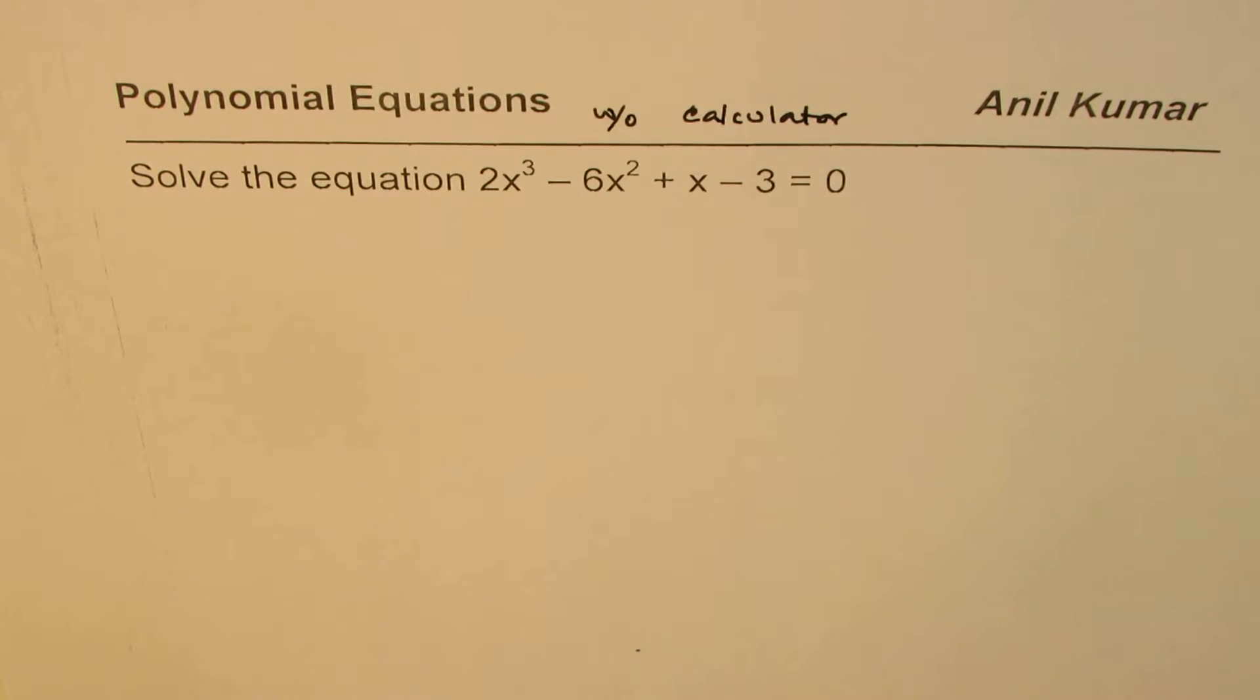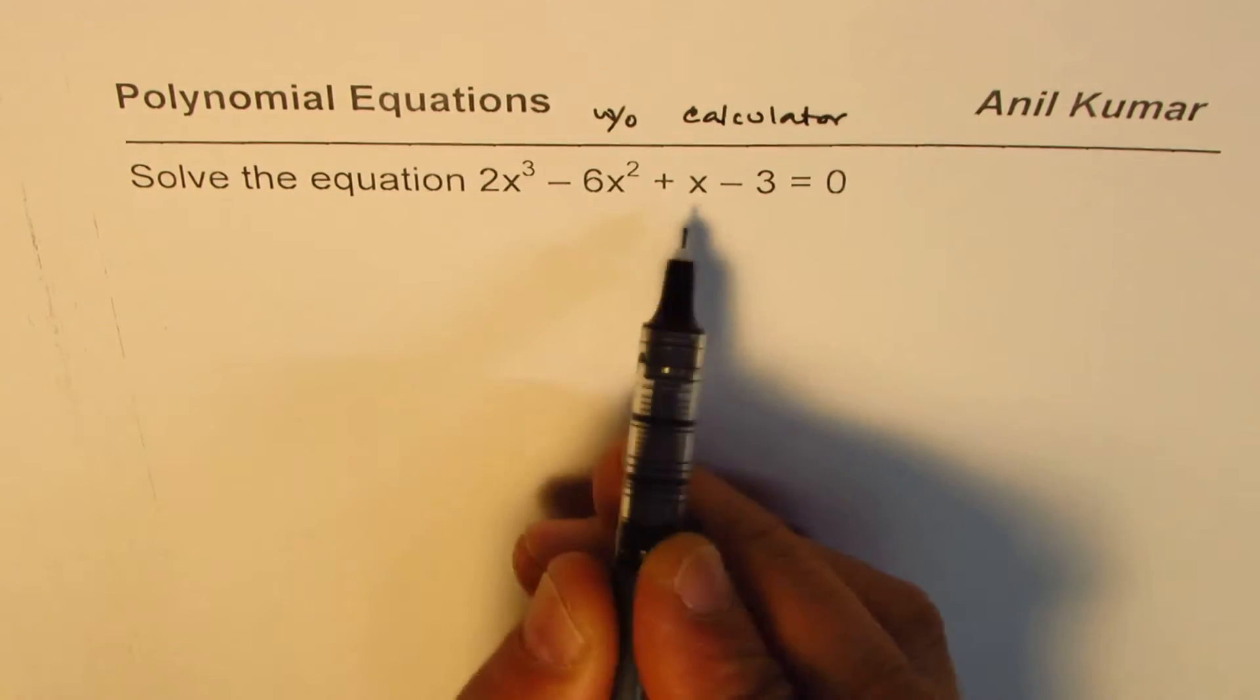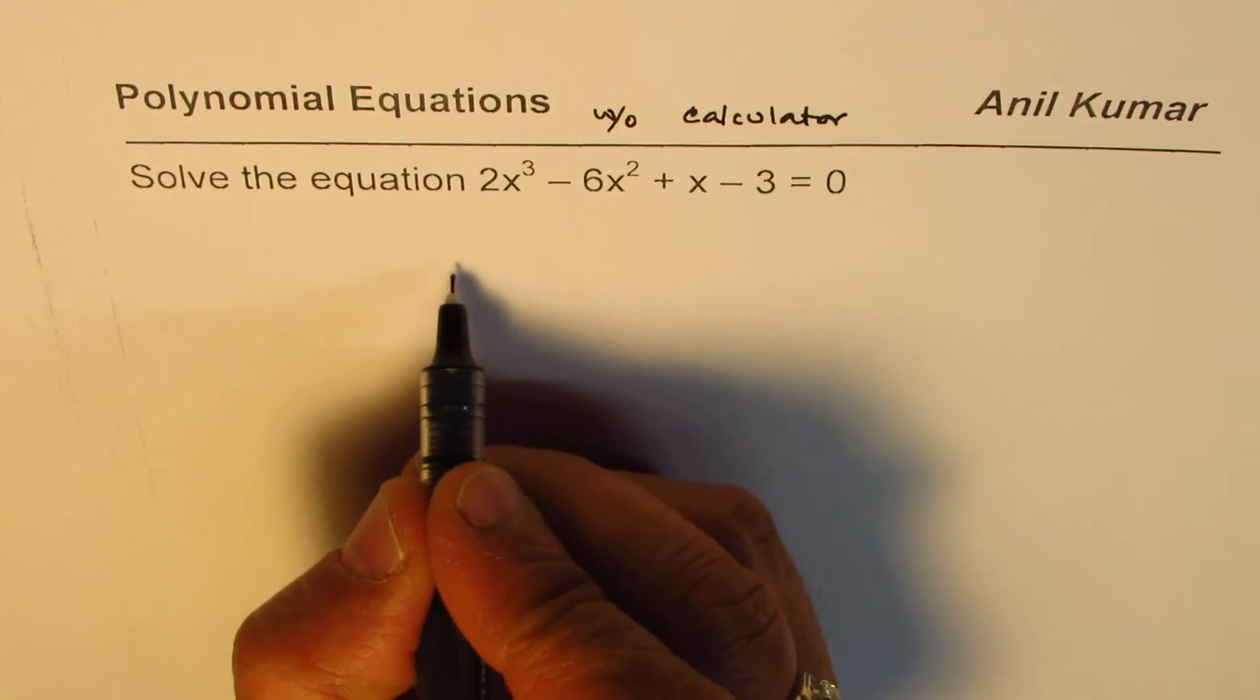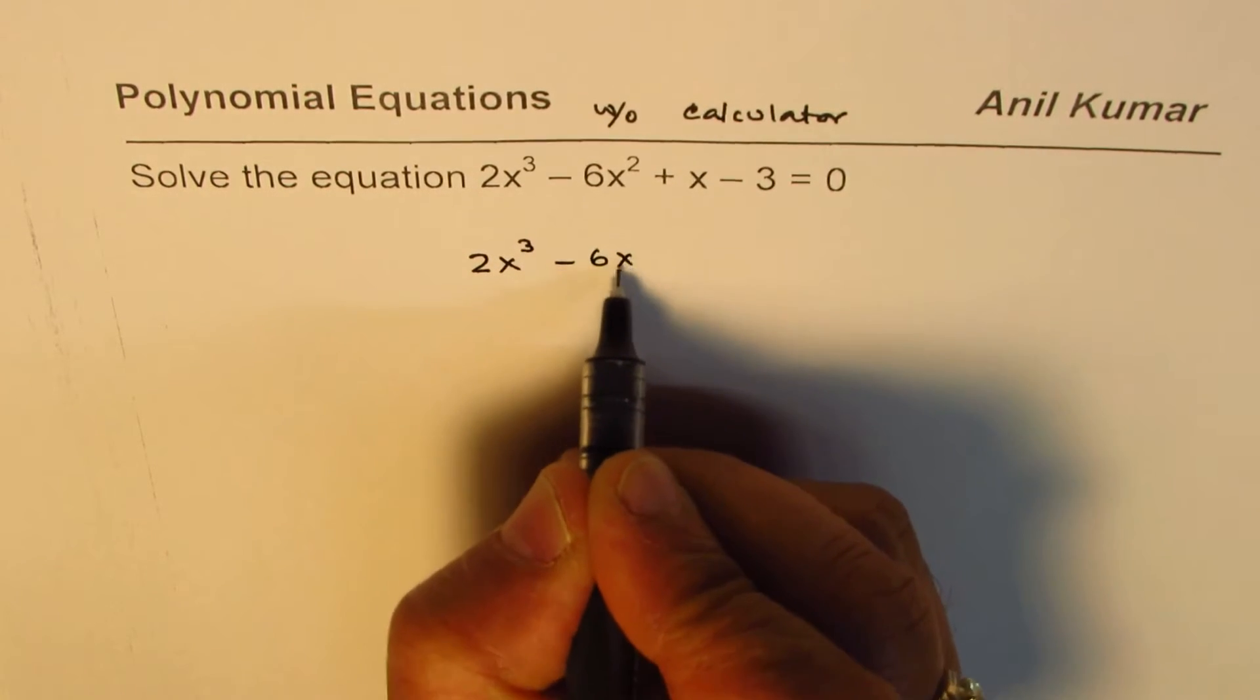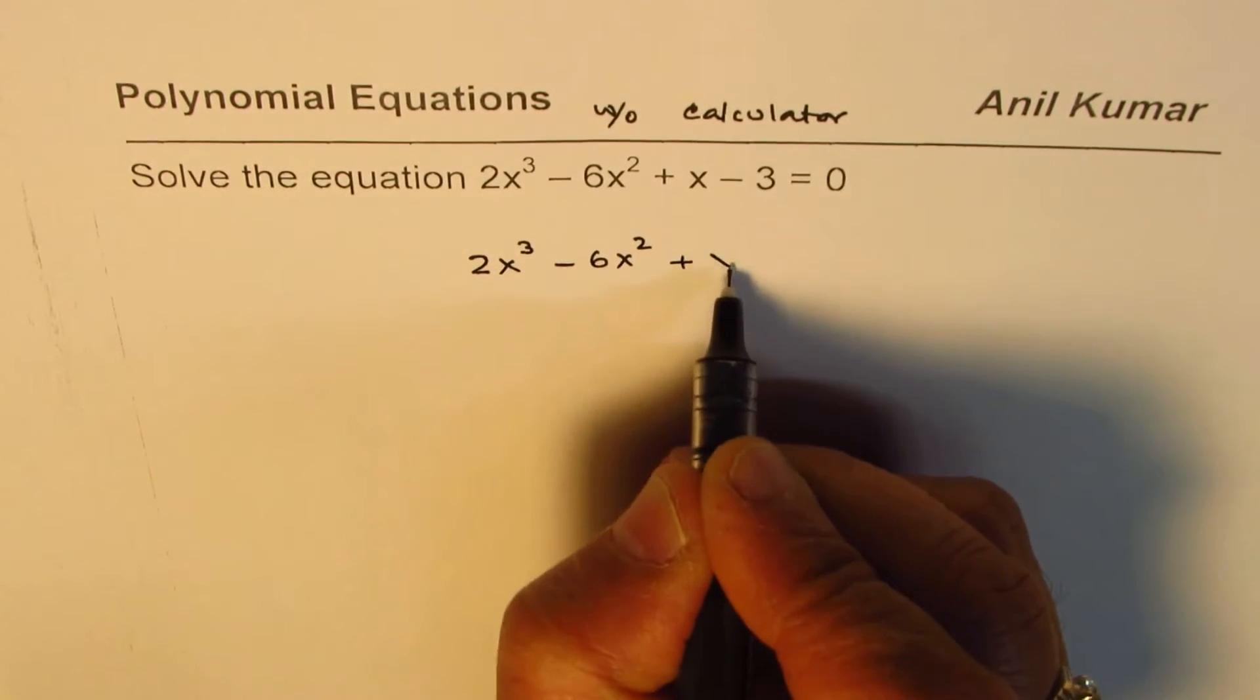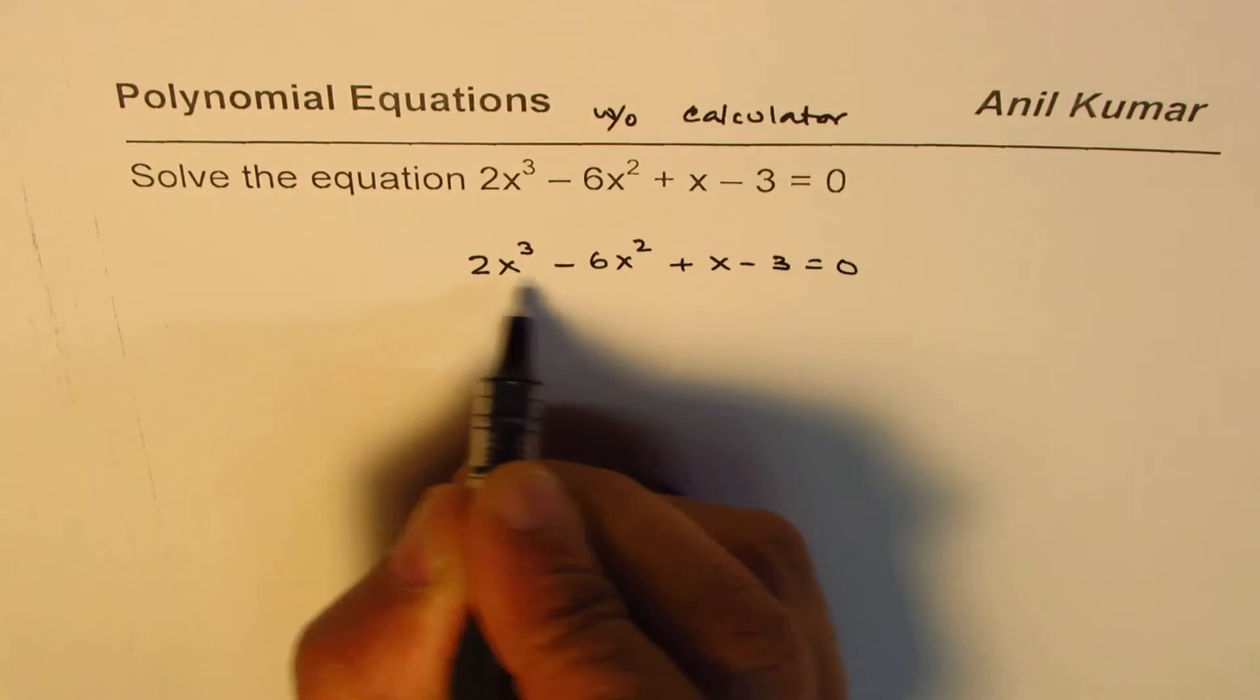Now we are given four terms. You can factor and then solve it. Let's see how. We have 2x³ - 6x² + x - 3 = 0.